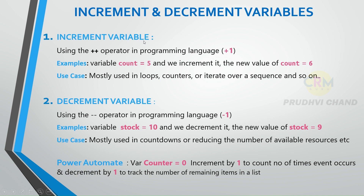First we will see about increment variable. Incrementing a variable means increasing its value by a certain amount. This is generally done using the plus-plus operator in programming languages, which is nothing but plus one — it adds one to the current value of the variable. For example, if the variable count is 5 and we increment it, the new value of count equals 6, because 5 plus 1 is 6.